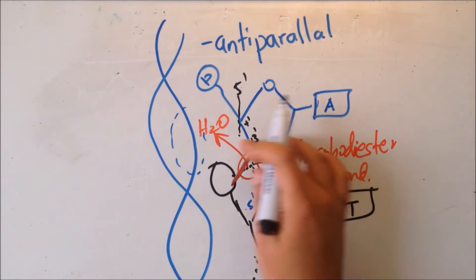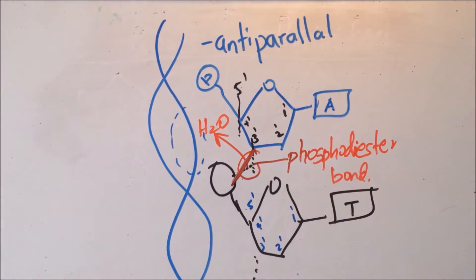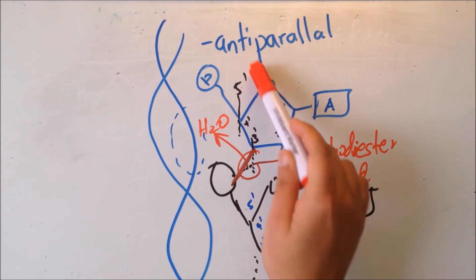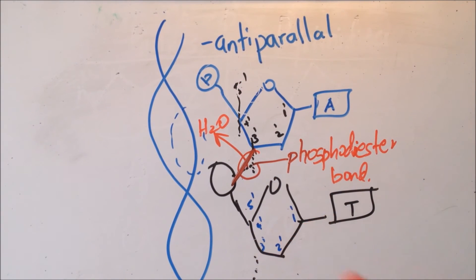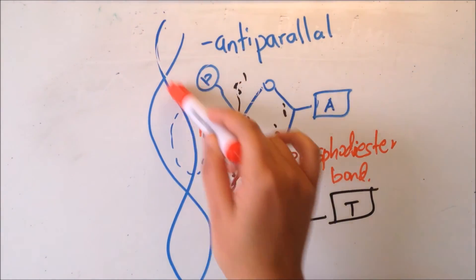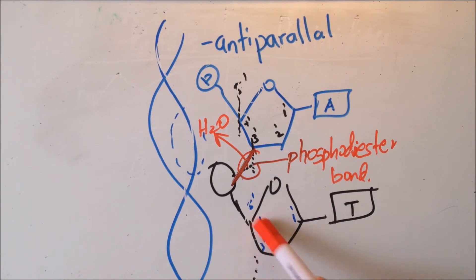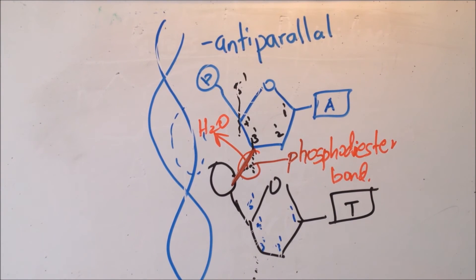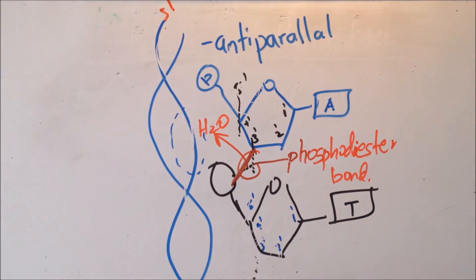Likewise, many nucleotides bond together forming a chain. Looking at the first nucleotide, the 5' end of the carbon is free at the top. At the last nucleotide in the chain, the 3' end is free. So we label this chain from the 5' end down to the 3' end.